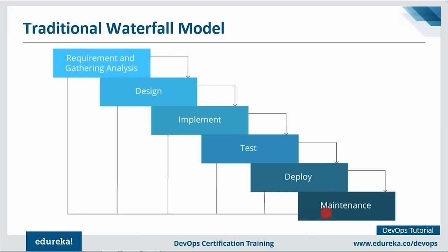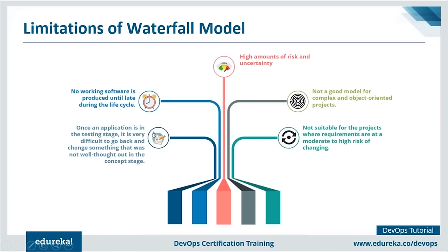This model looked perfect at the time, but consider using it now. Here are a few disadvantages. Once the application is in the testing stage, it is very difficult to go back and change something not well thought out in the concept stage. If a bug is found in testing, you'd need to go through the entire source code, which used to take a lot of time.